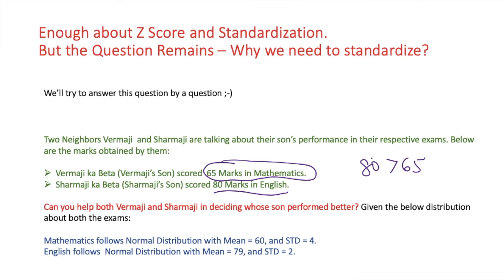Mathematically this claim is true, but statistically speaking, since the variability between both exams is different, we cannot compare them just by looking at the raw scores. The way students performed in English may be very different from how they performed in Mathematics. So how do we solve this problem? In order to compare, we have to utilize the deviations from the mean — something related to what we just studied with Z-score.